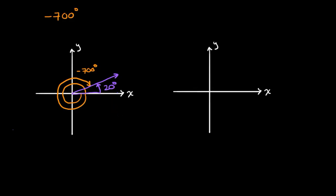Now, let's do it in radians. So let's say we're dealing with negative 13 pi over six radians. What does that look like? Well, once again, we can start at the positive x-axis.